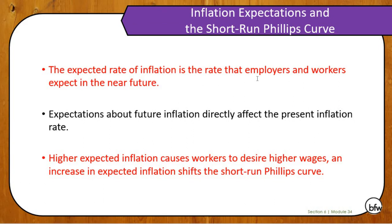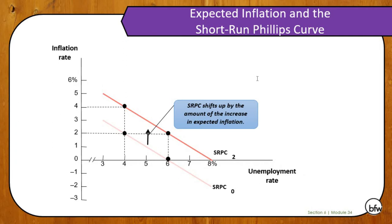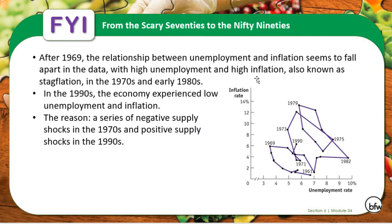Now, inflation expectations and the short run Phillips curve: the expected rate of inflation is the rate that employers and workers expect in the near future. Higher expected inflation causes workers to desire higher wages, which leads to a rightward shift of the short run Phillips curve. If inflationary expectations increase, the short run Phillips curve shifts to the right. In the late 1970s we had stagflation right after the Phillips curve was invented, which caused that rightward shift. That led economists to realize the Phillips curve still exists — it just exists further out to the right than before.